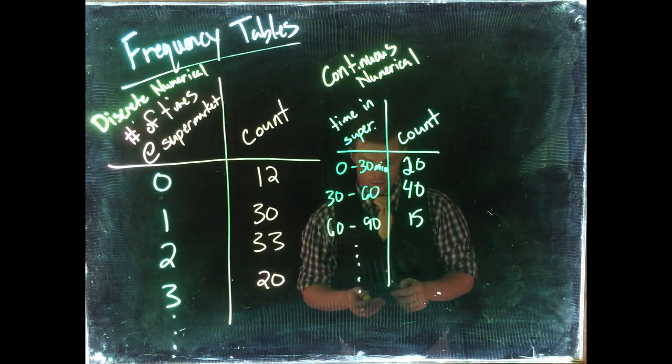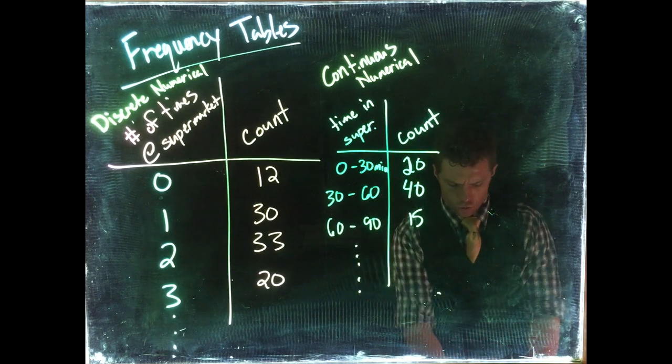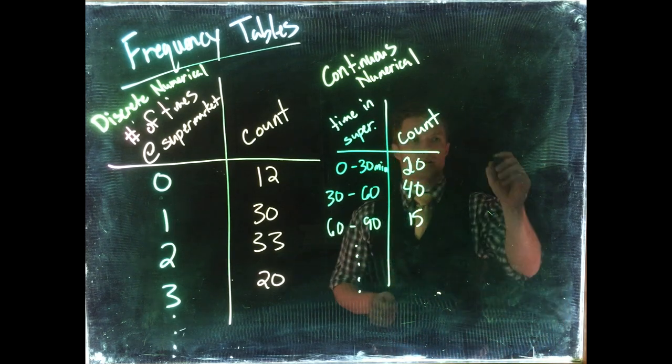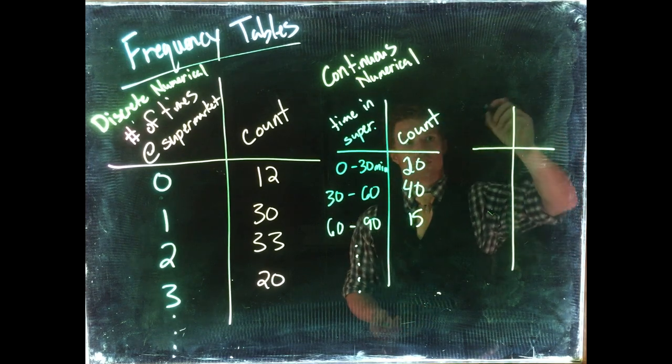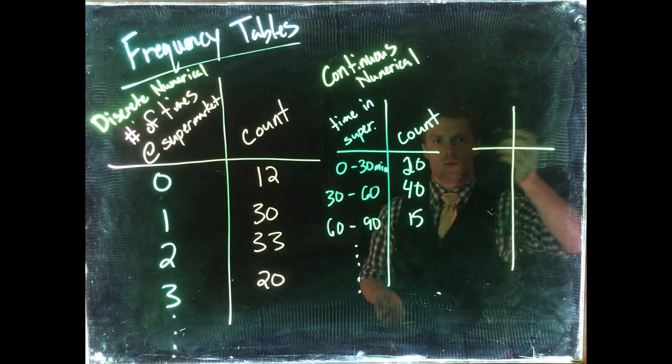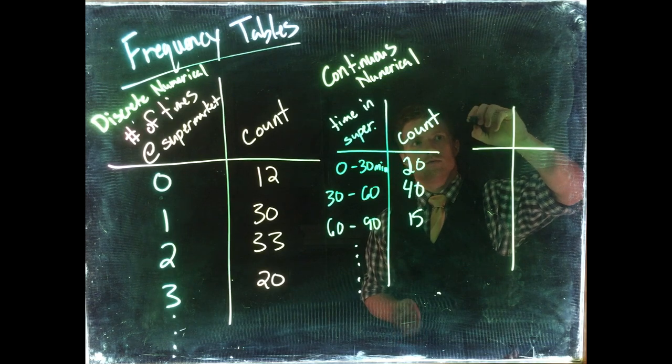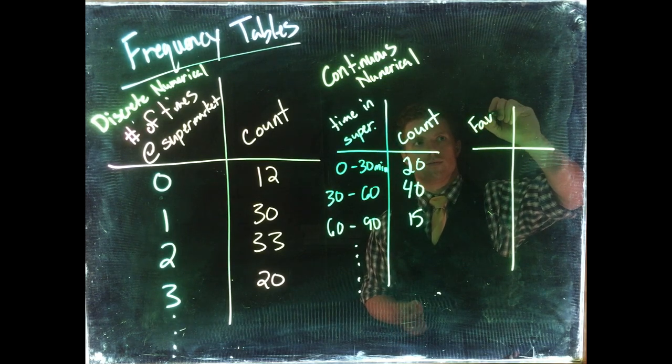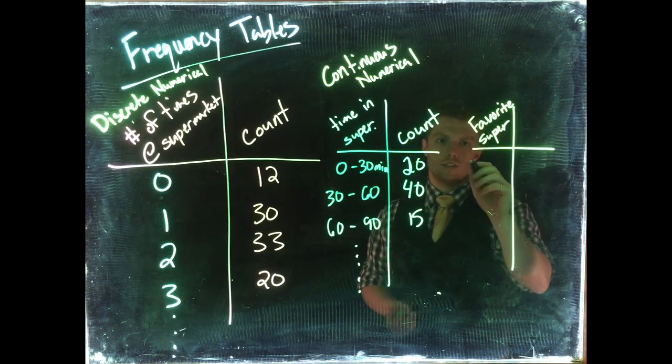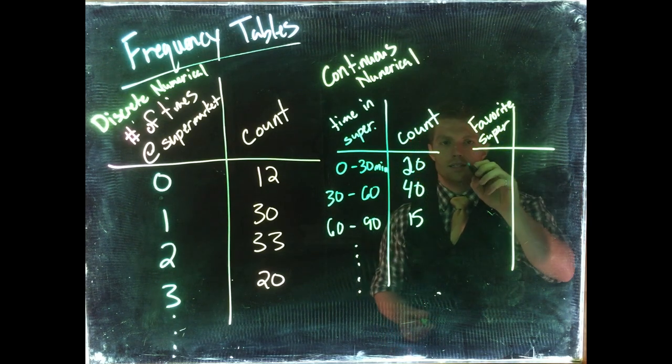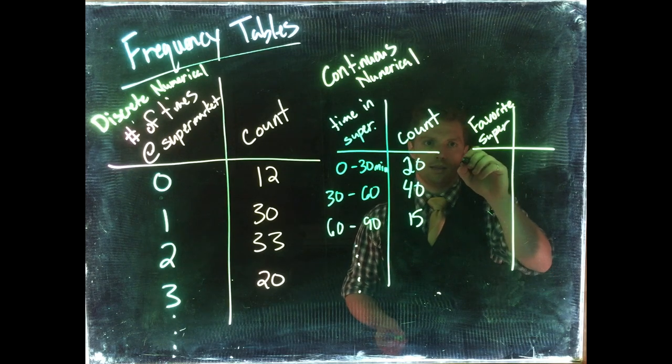We can also use frequency tables for categorical data. And maybe we would say, which supermarket do you attend the most? So, favorite, favorite supermarket. And we would see something like, you know, if we're looking at local places, maybe like Dave's.